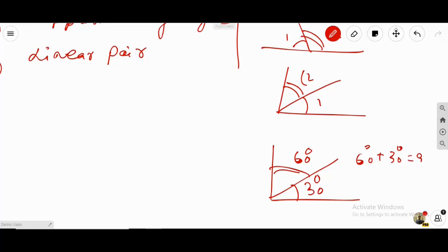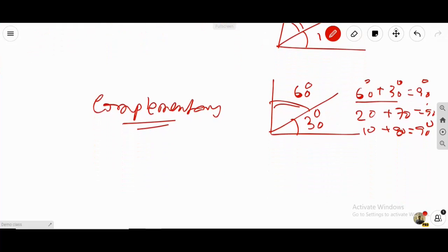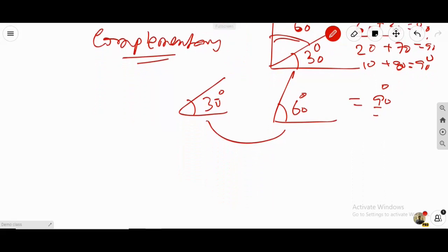So it doesn't have to be 30 and 60. It could be 20 and 70. Whatever the combinations that will get you 90 degrees exactly, then we call them as complementary angles. They don't have to belong to the same shape. For example, this is 30 degrees here and then I have another shape with 60 degrees. I still can call these two as complementary because I can get a 90 degree angle when I add them.